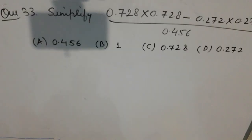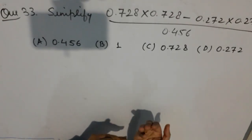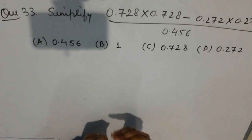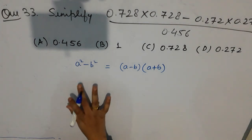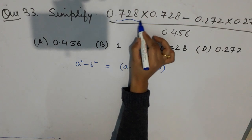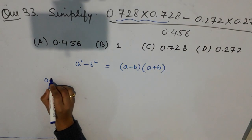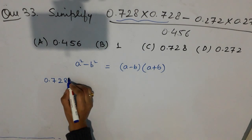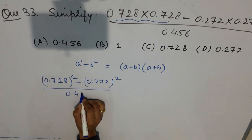Now we have question number 33, which is a simplification. As you can see this is a very big decimal number, but if you know the identity a² − b² = (a − b)(a + b) you can do it very easily. Here you can apply this identity because we have 0.728² minus 0.272² divided by 0.456.